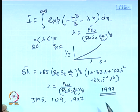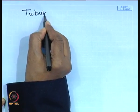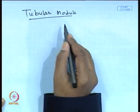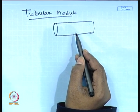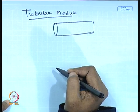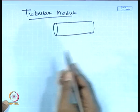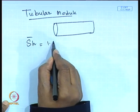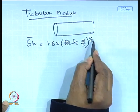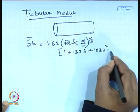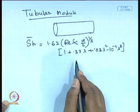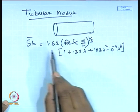Similar analysis can be carried out for tubular flow — where the conduit is a tube and the wall is porous. The length-averaged Sherwood number becomes 1.62 (Re·Sc·d/L)^(1/3) × [1 + 0.37λ + 0.03λ² − 10⁻⁴ λ³]. For λ equal to 0 you recover the Lévêque solution for tube flow: 1.62 (Re·Sc·d/L)^(1/3), where d is the inner diameter of the tube.